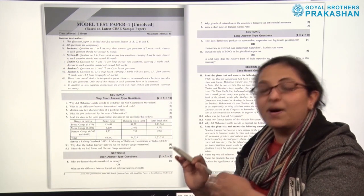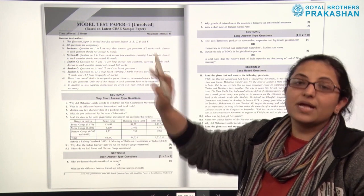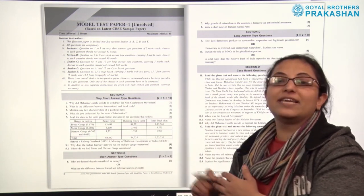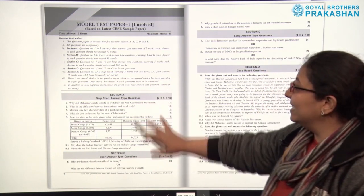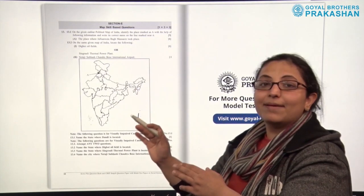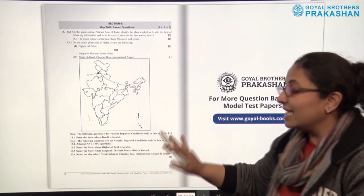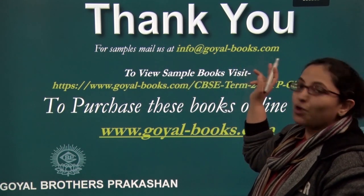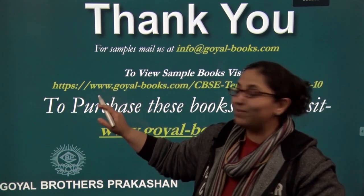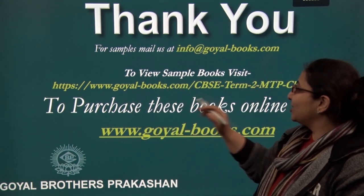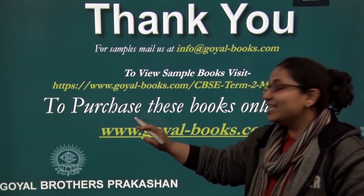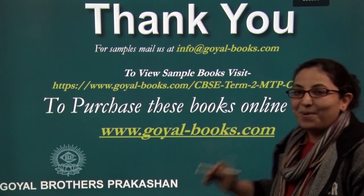After this, we come to section C of the book — the model test papers, which are unsolved. All the model test papers are based on the CBSE sample question paper. There are 5 model test papers, all unsolved for the practice of the students. The pattern is exactly the same as the sample question paper. If you wish to book samples for these question banks, you can mail us at info@goyal-books.com. To view sample books, you can visit www.goyal-books.com/cbse-term2-MTP-class10. To purchase these books, visit www.goyal-books.com.